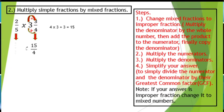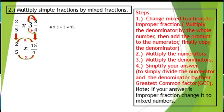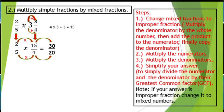Then, multiply it by 2 over 5. So, we have 2 over 5 times 15 over 4. We can now multiply the numerators. We have 2 times 15 will give you 30. And then, multiply the denominators. We have 5 times 4 will give you 20. So, our answer is 30 over 20.